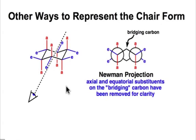Let's examine the chair form in more detail. Here's a line angle drawing of the chair form, and what you can see are two different types of substituents. In red, labeled A, are the axial substituents.